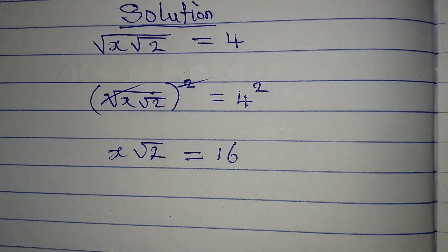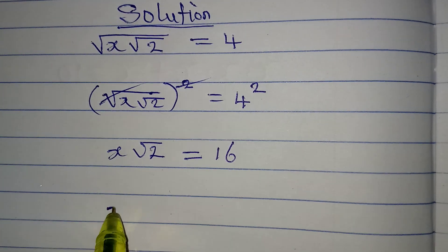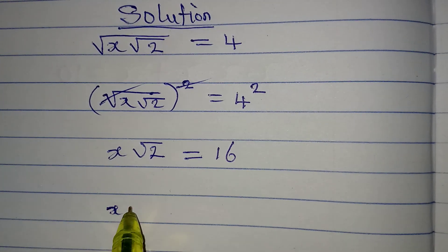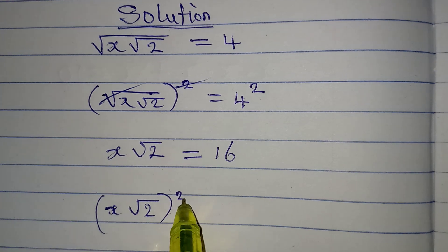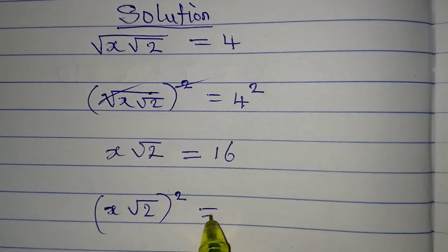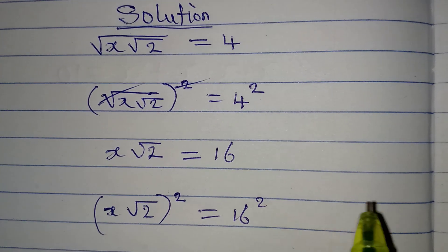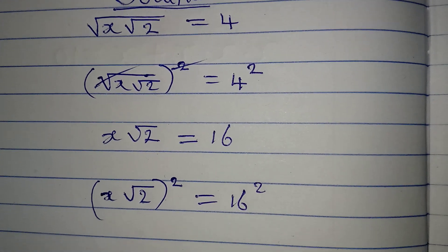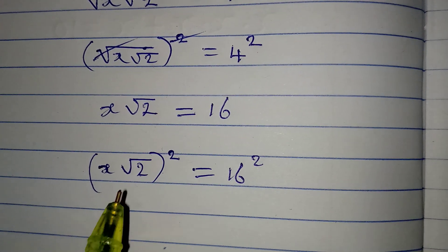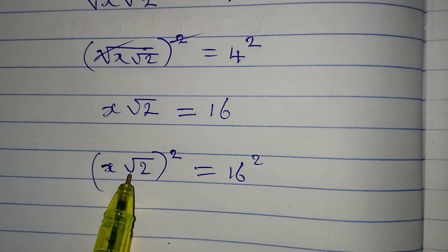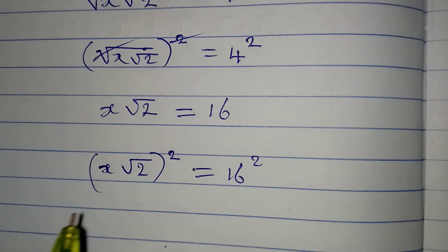So the next thing is to square both sides again. So x root 2 will be squared and that will be equal to 16 squared. By the way, I'm squaring both sides again because I need to remove the square root from here.